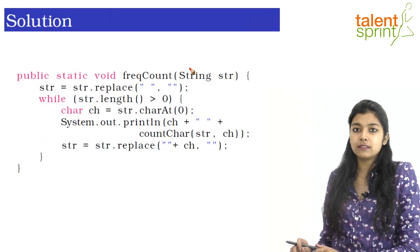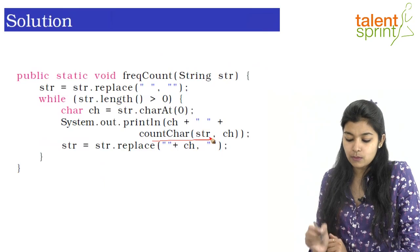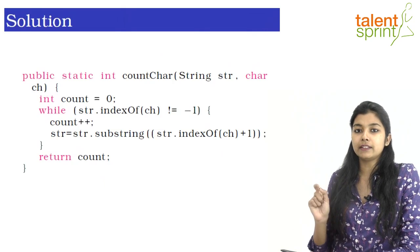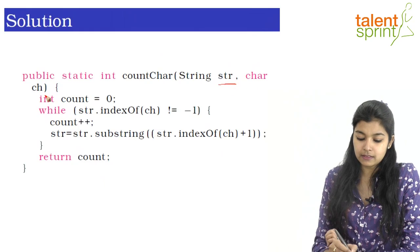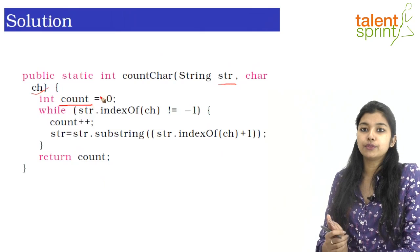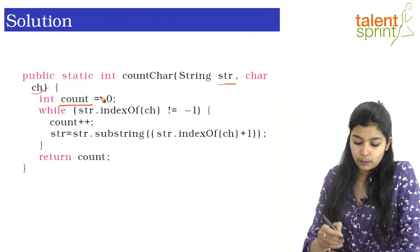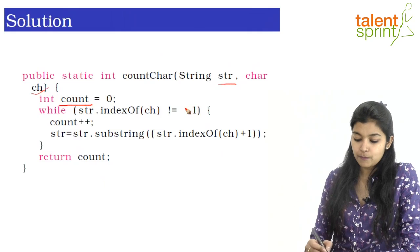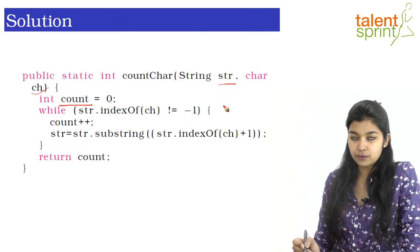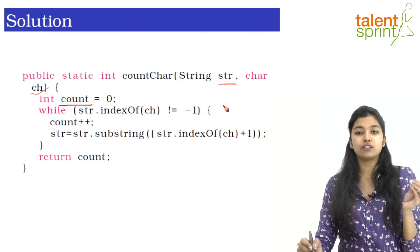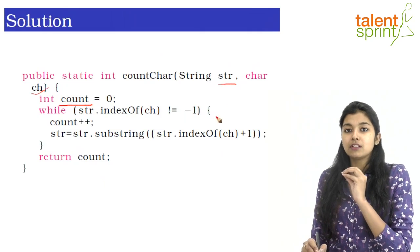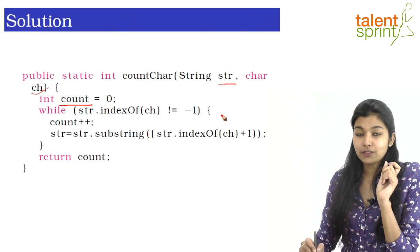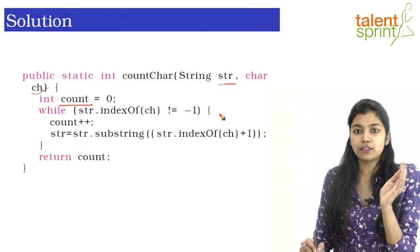The actual counting of frequency happens inside the countChar function. In countChar we pass the string and the character to be tested. We have created a variable count initialized to 0. Inside the while loop we check if the particular character is occurring in your string even once using str.indexOf(character) not equal to minus one. If it equals minus one that means the character is not in the string at all. If not equal to minus one it returns the position of the character, assuring it is in the string at least once.